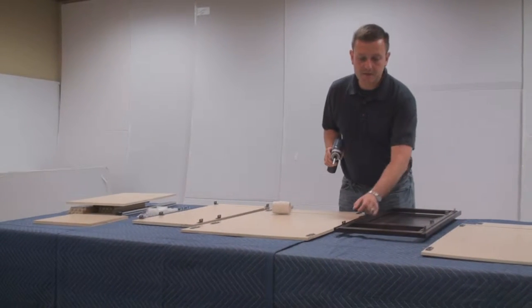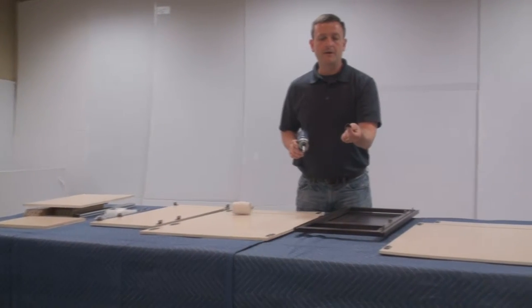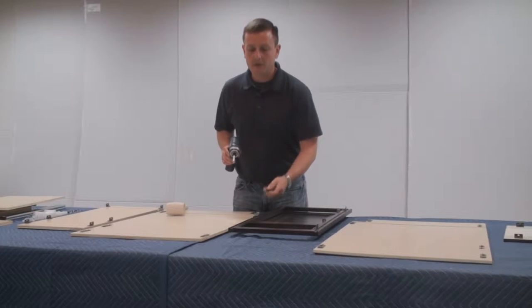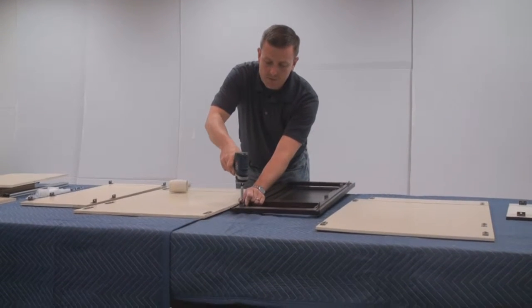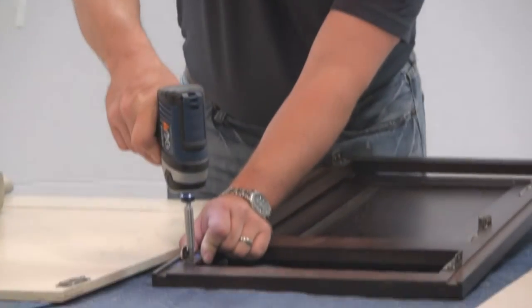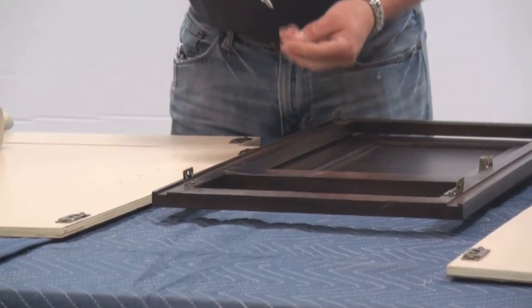The next step is we need to assemble and install our male clips onto our cabinetry. Again, there's pre-set holes for these to align here. We're going to go ahead and screw those in with two screws.